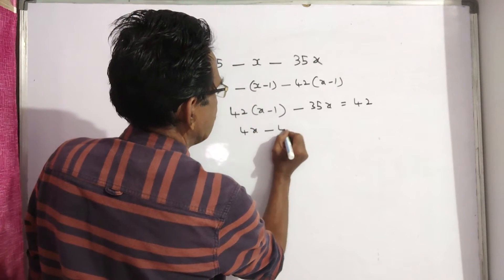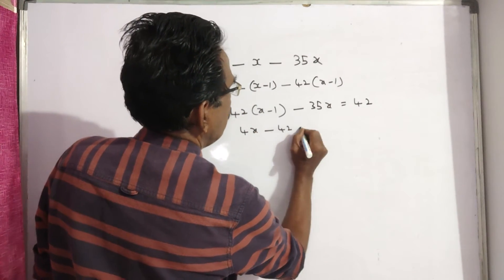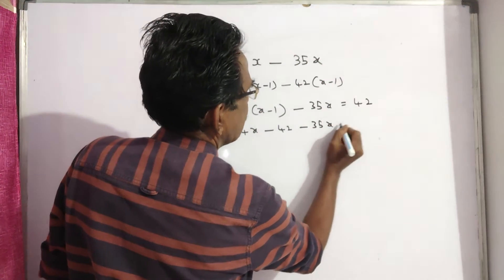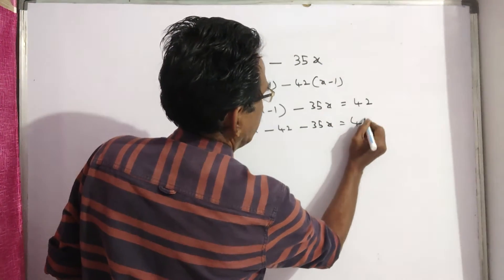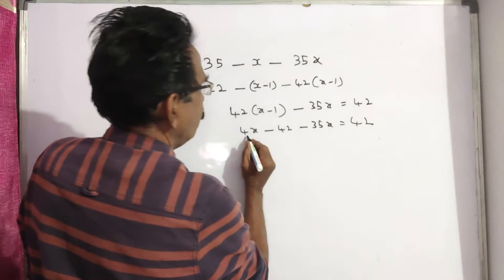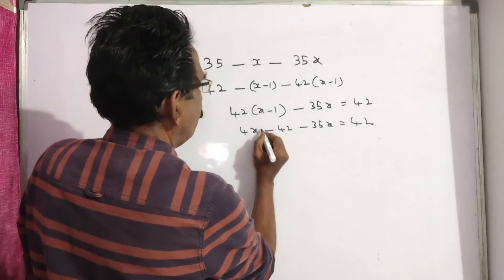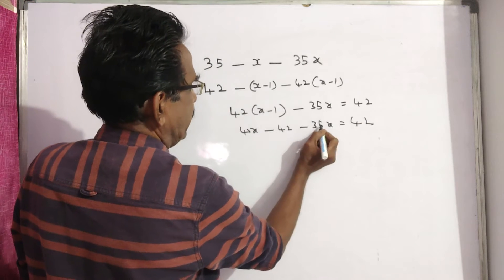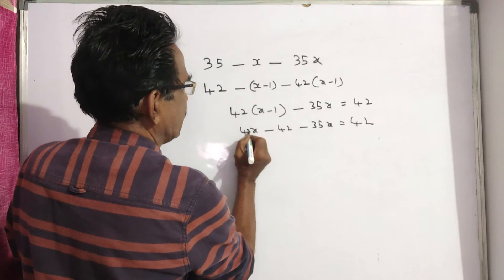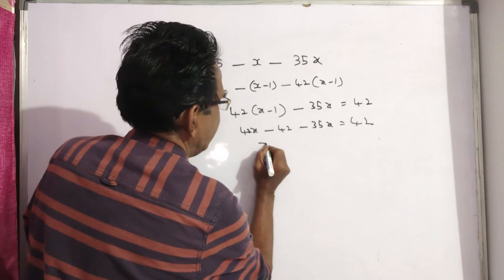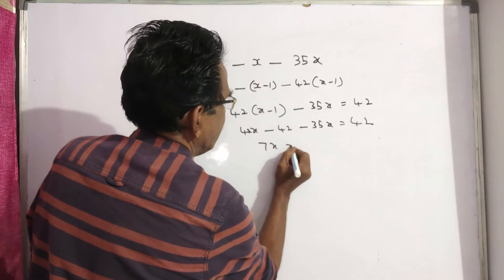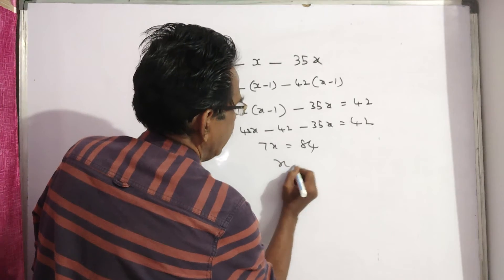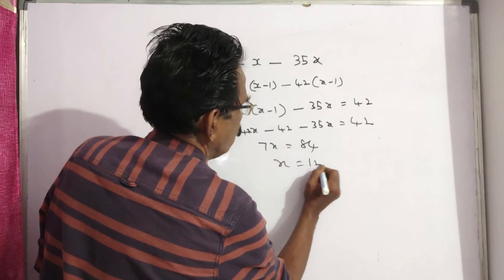42X minus 42 minus 35X is equal to 42. So, 42X minus 35X gives 7X equal to 84, therefore X is equal to 12.